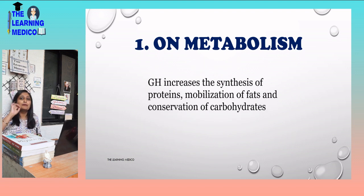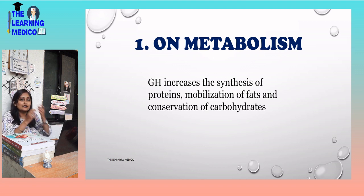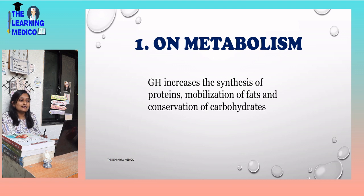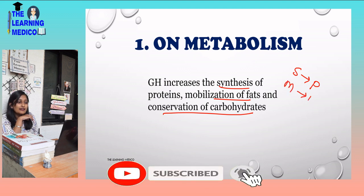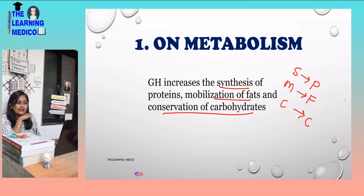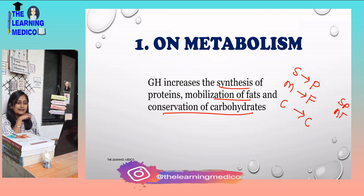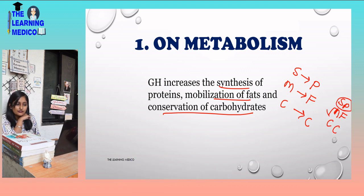What is the role of Growth Hormone in metabolism? Metabolism means breakdown. We can break down proteins, fats, and carbohydrates. Growth Hormone increases the synthesis of protein (SP), metabolism of fats (MF), and conversion of carbohydrates (CC). These three things are important: synthesis of protein, metabolism of fat, and conversion of carbohydrates.